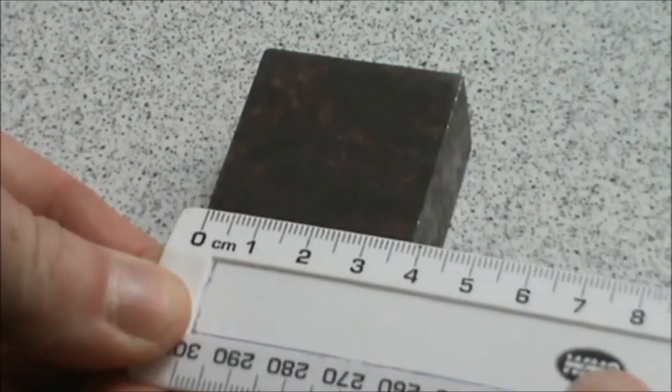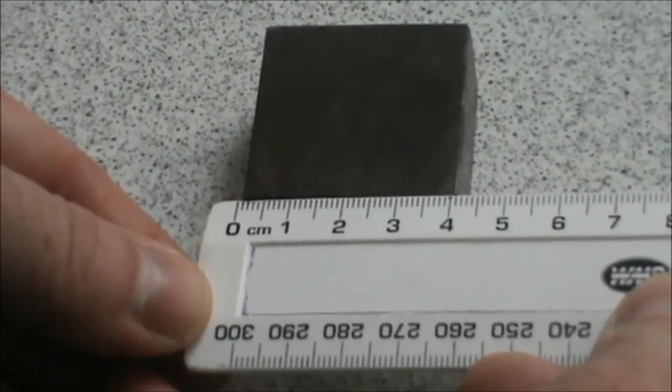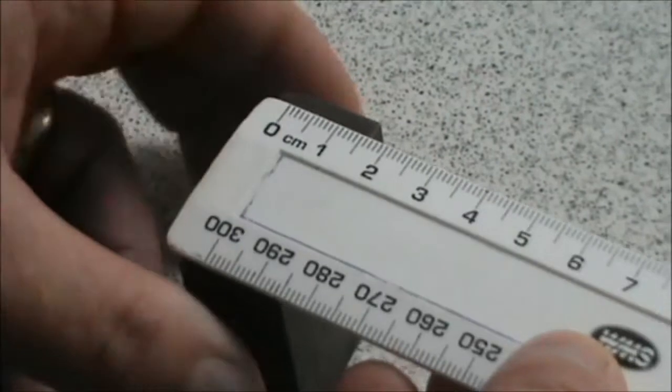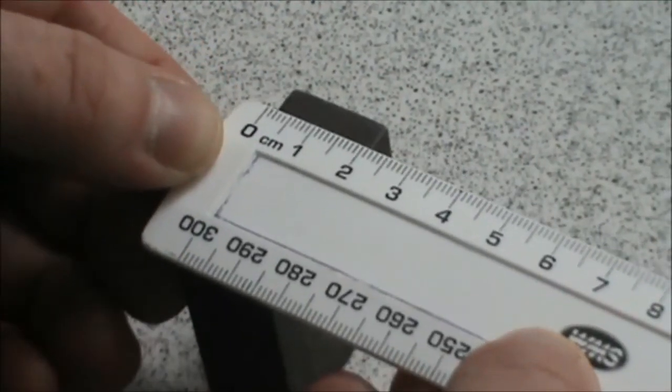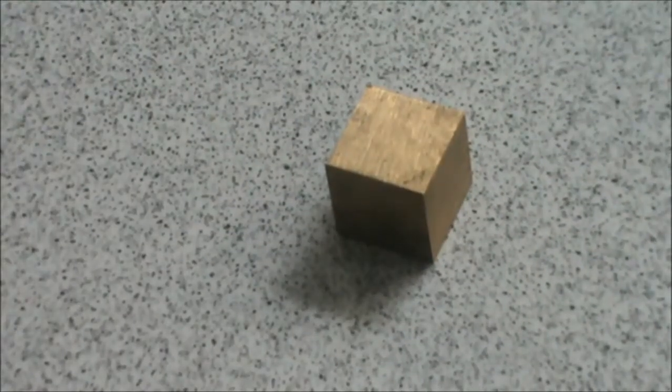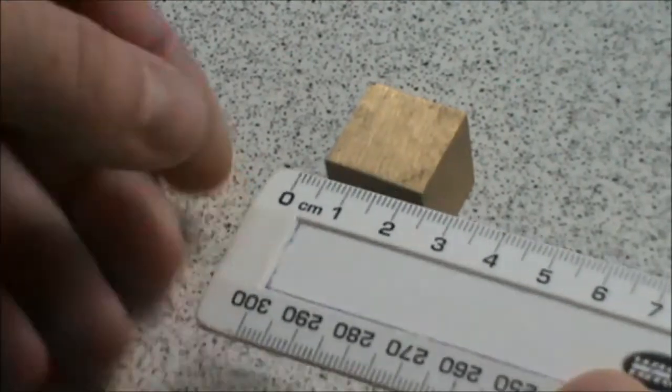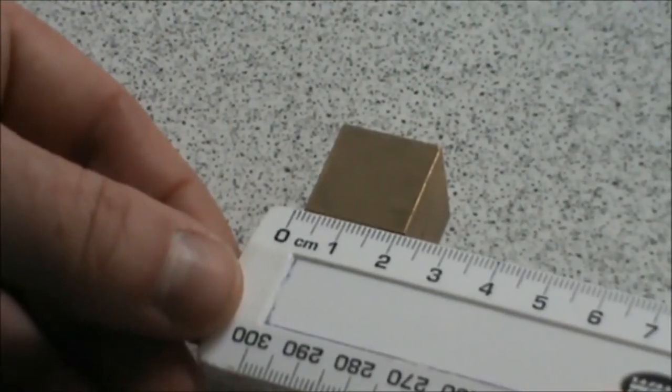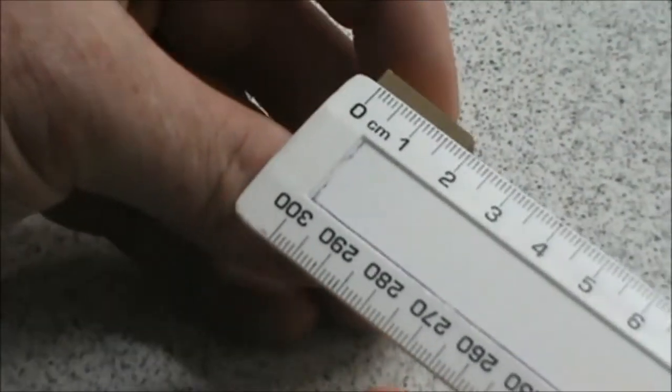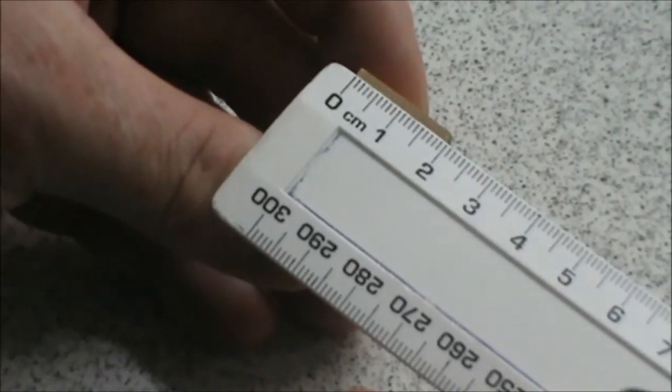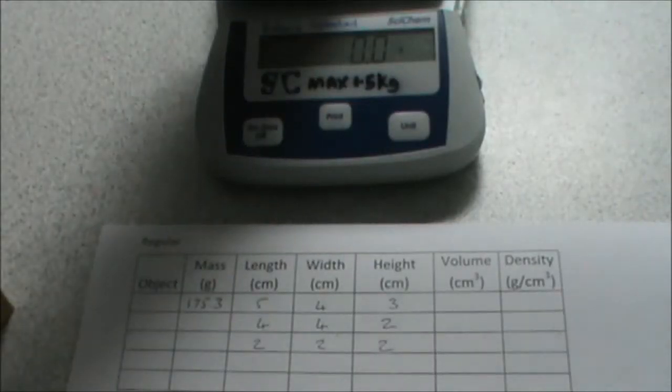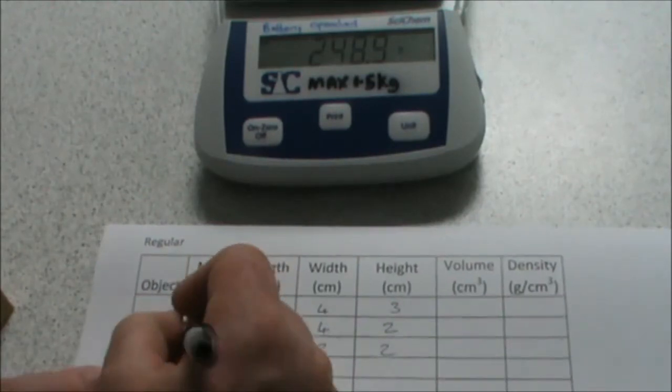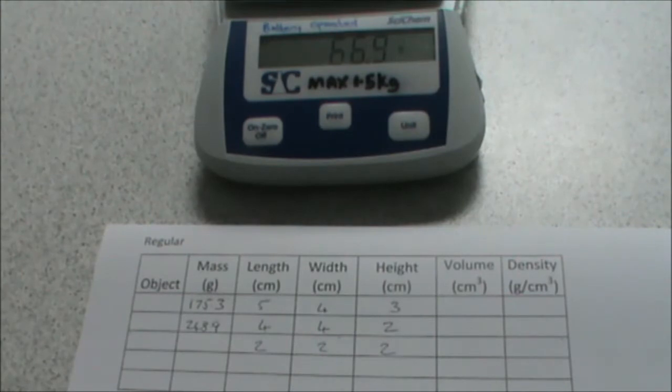Here we have four centimeters by four centimeters by two centimeters, and here we have two centimeters by two centimeters by two centimeters. Measuring the mass of our other objects, we have a mass of 248.9 grams and a mass of 66.9 grams.